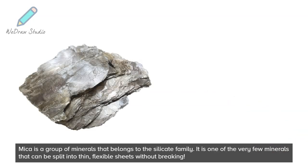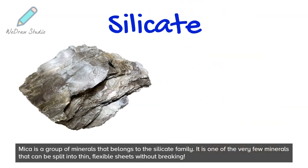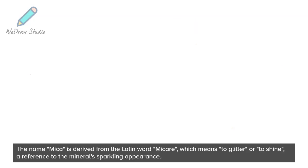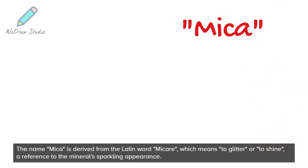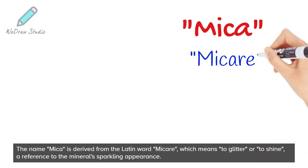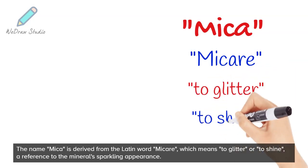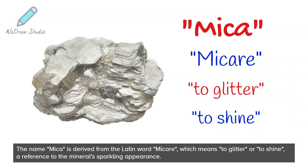Mica is a group of minerals that belongs to the silicate family. It is one of the very few minerals that can be split into thin, flexible sheets without breaking. The name mica is derived from the Latin word 'micar', which means to glitter or to shine, a reference to the mineral's sparkling appearance.